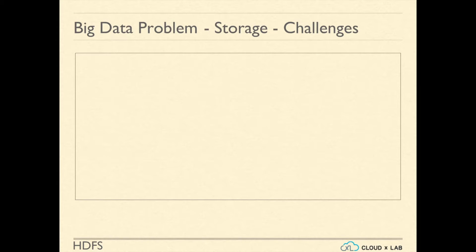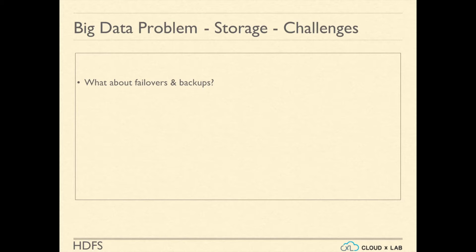How will we handle failover and backups? Failover means switching to a redundant or standby hard disk upon the failure of any hard disk. For backup, we can put extra hard disks or build a RAID, which is a redundant array of independent disks, for every hard disk in the system. But still, it will not solve the problem of failover, which is very important for real-time applications.